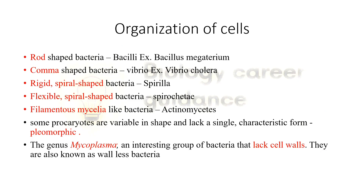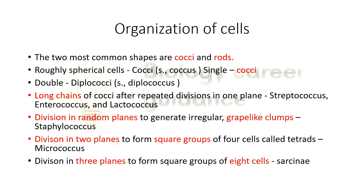To summarize: spherical shape is cocci, rod shape is bacilli. Chain of spherical-shaped bacteria is streptococci. Cluster of spherical-shaped bacteria is staphylococci. Chain of rod-shaped bacteria is streptobacilli. Spherical-shaped bacteria are also presented in different forms. Roughly spherical is cocci. Double is diplococci. Long chains is streptococci — for example enterococci or lactococci. Division in random planes results in clusters.